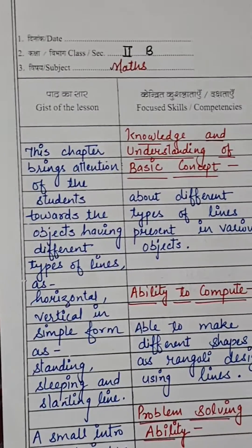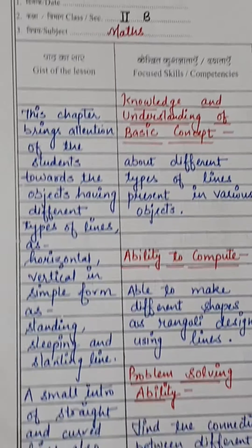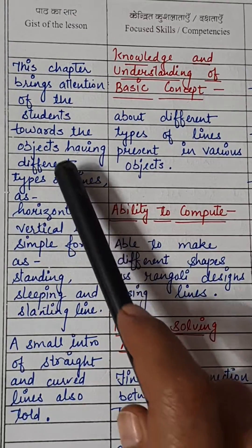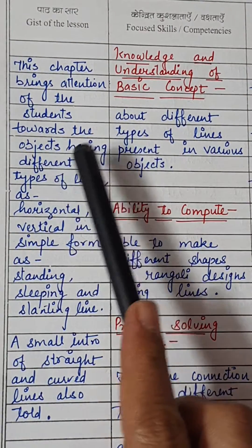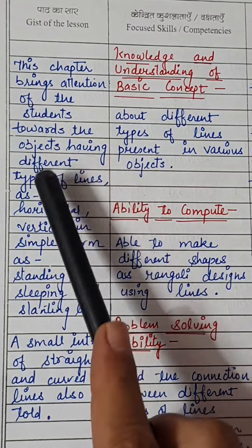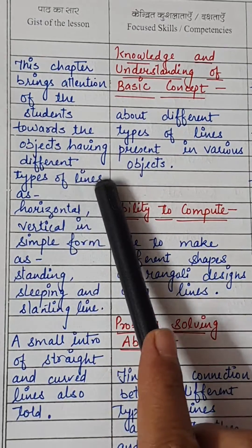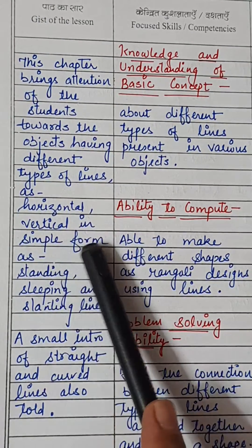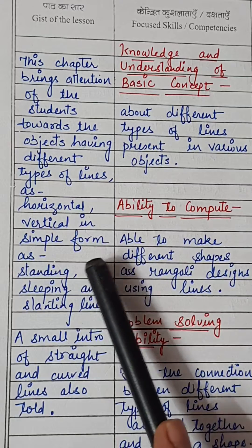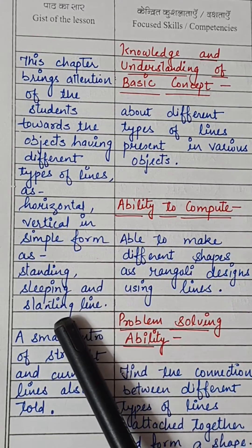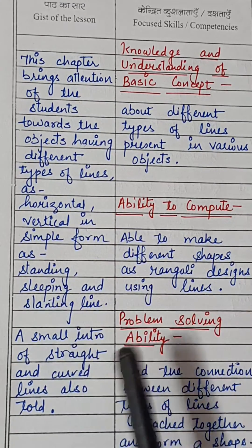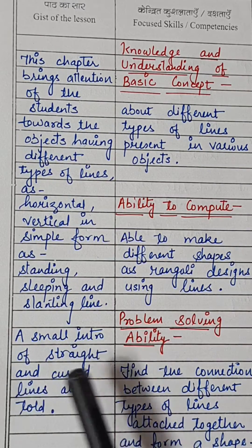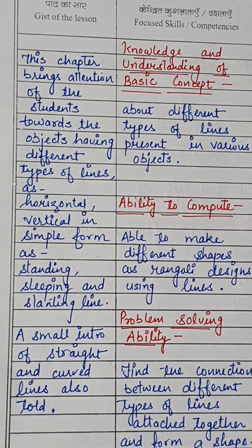Talking about the gist of the lesson, this chapter brings attention of the students towards objects having different types of lines such as horizontal, vertical — in simple form as standing, sleeping, and slanting lines. A small intro of straight and curved lines is also included.